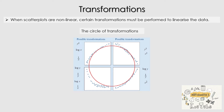Let's begin by looking at two things in this part of the video. The first one is why we use transformations or why we transform data, and the second part is just looking at the circle of transformations. So when scatter plots are non-linear, certain transformations must be performed to linearise the data. That's the whole reason why we perform those transformations — to linearise the data or to make them into a straight line, or as close to a straight line as possible.